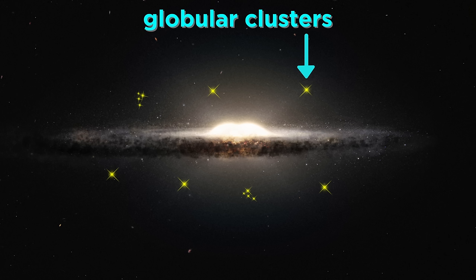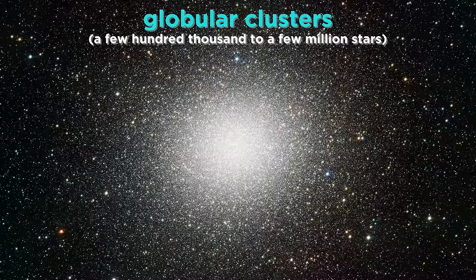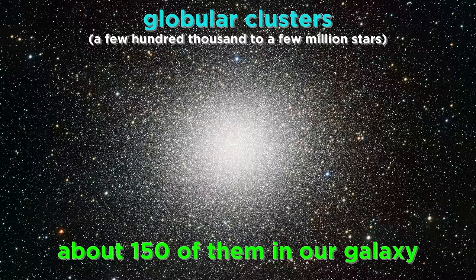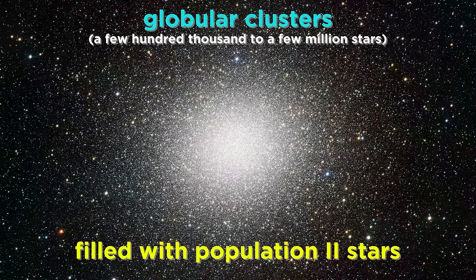Beyond the stars in the disk, there are also several objects in more distant orbits called globular clusters. These are dense spherical collections of stars, anywhere from a few hundred thousand to a few million, and there are a little more than a hundred and fifty of them traveling around the halo. These are always filled with population two stars, indicating that they are very old, probably forming at the same time as the Milky Way.